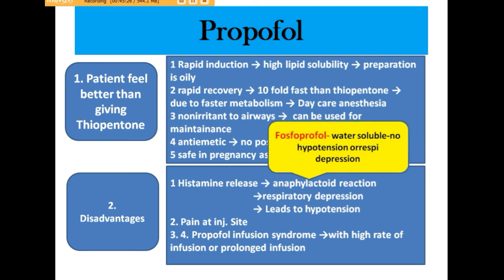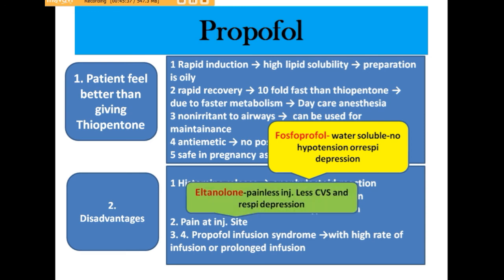Disadvantages of propofol include histamine release — which may lead to anaphylactoid reactions — respiratory depression, hypotension (similar to thiopentone), pain at the injection site, and propofol infusion syndrome when given at a high rate of infusion for a prolonged time period. Phosphopropofol is a water-soluble alternative to propofol that does not cause hypotension or respiratory depression. Althenolone is another painless injectable IV anesthetic agent with fewer cardiovascular side effects and no respiratory depression, making these two newer alternatives to propofol.